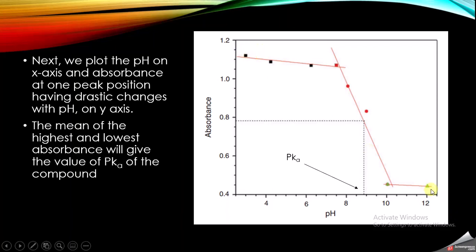To find the pKa value, we take the mean value of the maximum absorbance and the minimum absorbance. We draw a straight line from this mean absorbance value horizontally to intersect the plot, then go downward to the x-axis. The pH value at that intersection corresponds to the pKa of the compound. In this way we can use electronic absorption spectroscopy data to find the pKa.